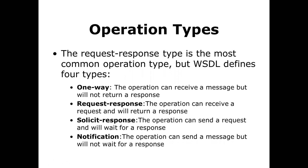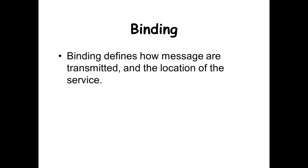When it comes to operation types in WSDL, there are four types: one-way, request-response, solicit-response, and notification. One-way means the operation can receive a message but will not return a response. Request-response means the operation can receive a request and will return a response. Solicit-response means an operation can send a request and will wait for a response. Notification means the operation can send a message but will not wait for a response.